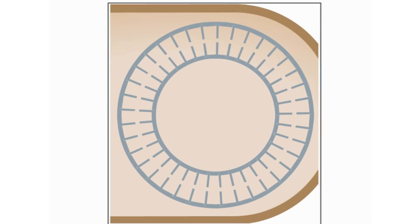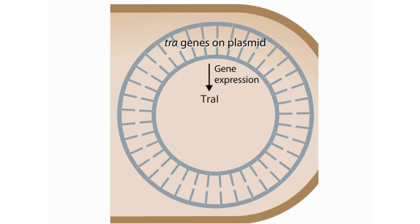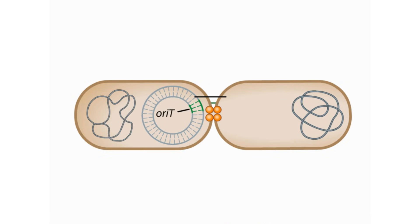The plasmid encodes a number of transfer or TRA genes whose protein products carry out transfer of DNA. The F-factor also contains a site called Ori-T for origin of transfer, where the transfer of F-factor DNA begins.